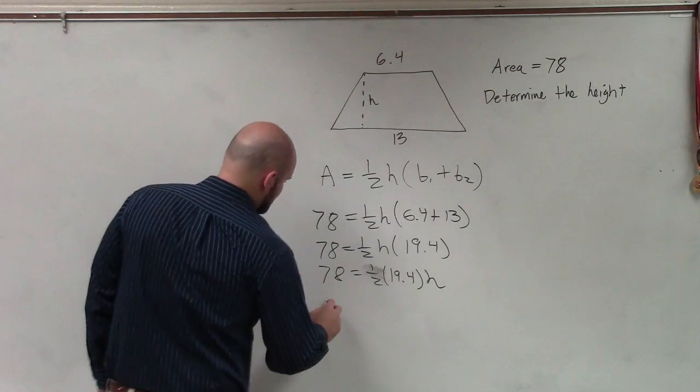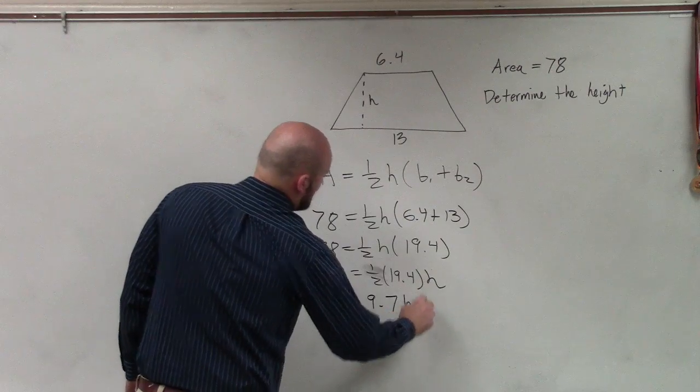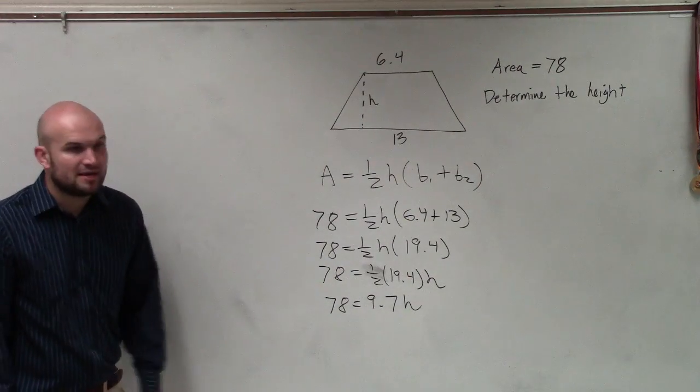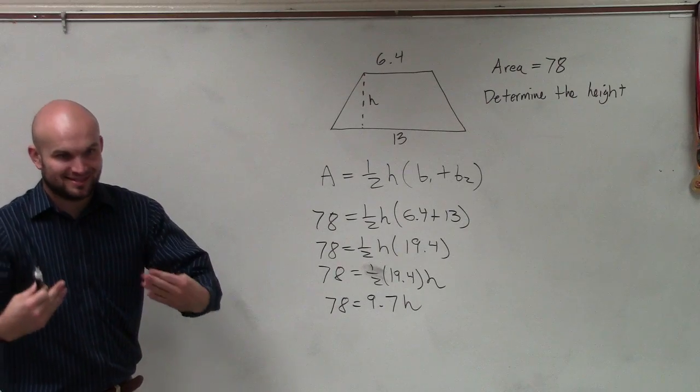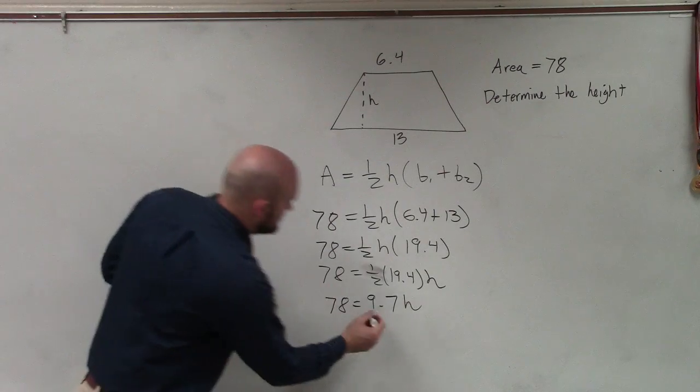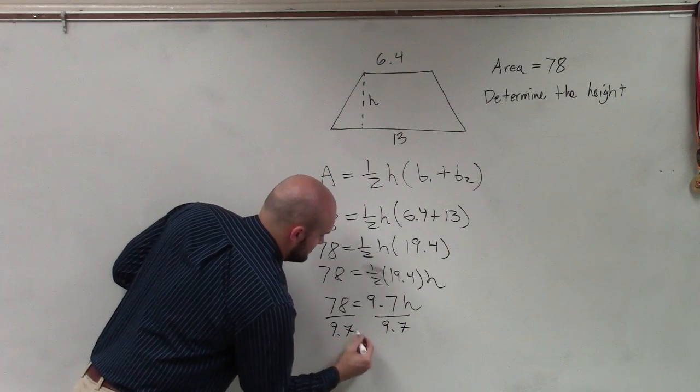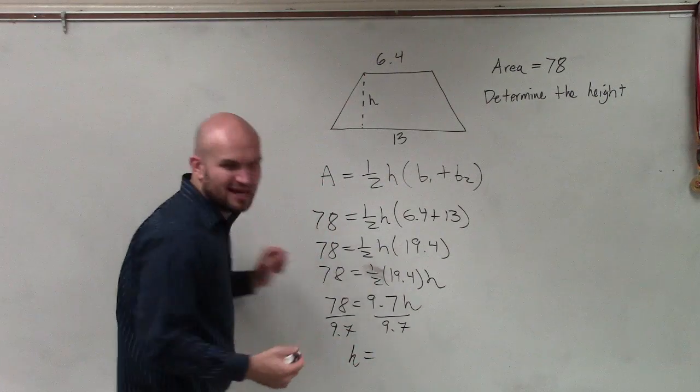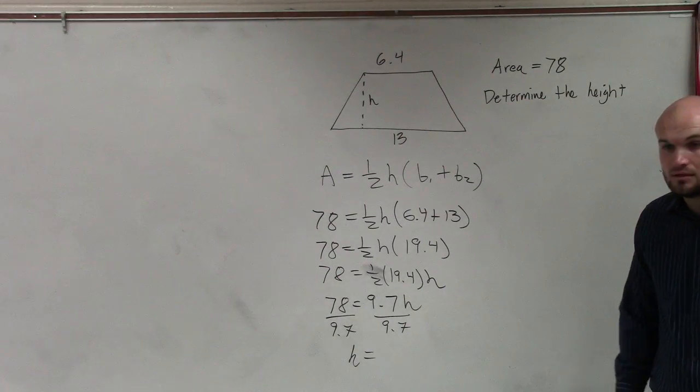9.7. Now I have 9.7 times h. So to undo multiplication, you have to divide. Therefore, h equals—I don't know this one, maybe I'll ask Blake to help me out—h equals 8.